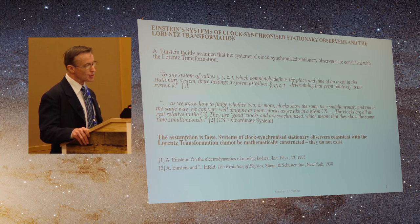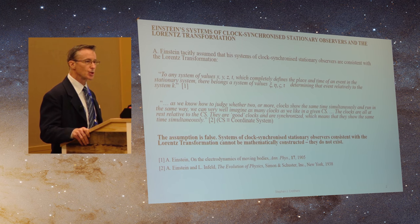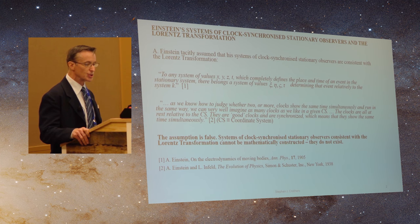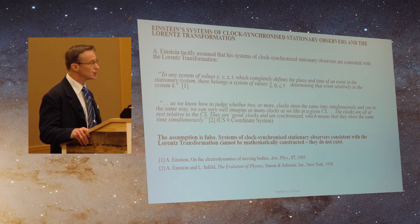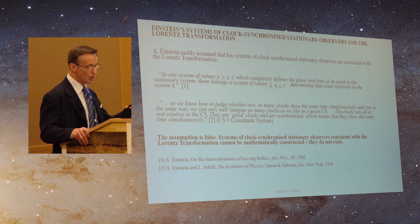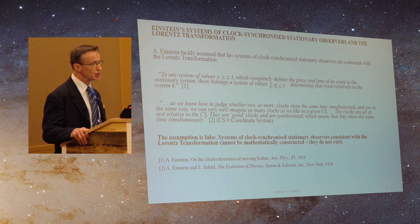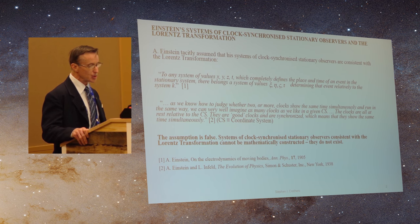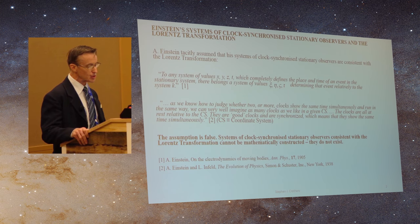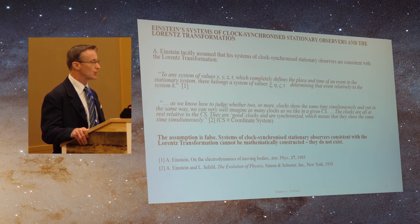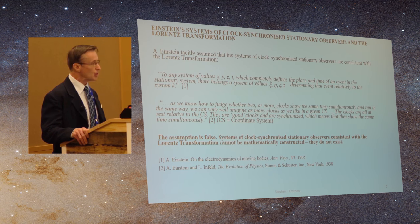In actually formulating his special theory, he tacitly assumed that he could construct systems of clock-synchronized stationary observers consistent with Lorentz transformation. There's a couple of quotations there from Einstein to that effect. However, this assumption is false. Systems of clock-synchronized stationary observers consistent with Lorentz transformation cannot be mathematically constructed. They don't exist.